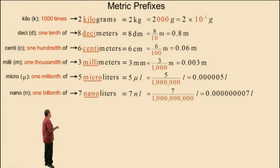2000 grams can be written as 2 times 10 to the 3rd grams, because 10 to the 3rd represents 1,000. 8 decimeters can be written as 8 times 10 to the negative 1 meters, because 10 to the negative 1 represents one tenth. There we go.